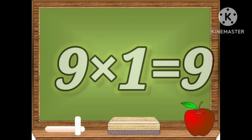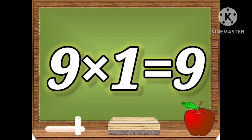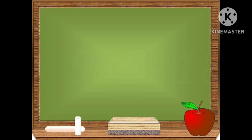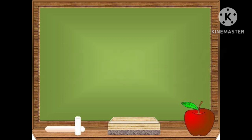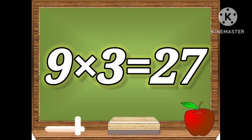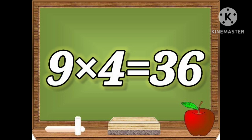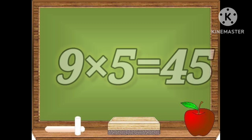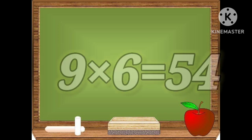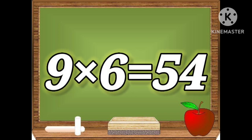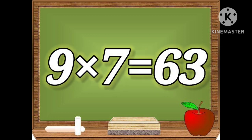Nine ones are nine. Nine twos are eighteen. Nine threes are twenty-seven. Nine fours are thirty-six. Nine fives are forty-five. Nine sixes are fifty-four. Nine sevens are sixty-three.